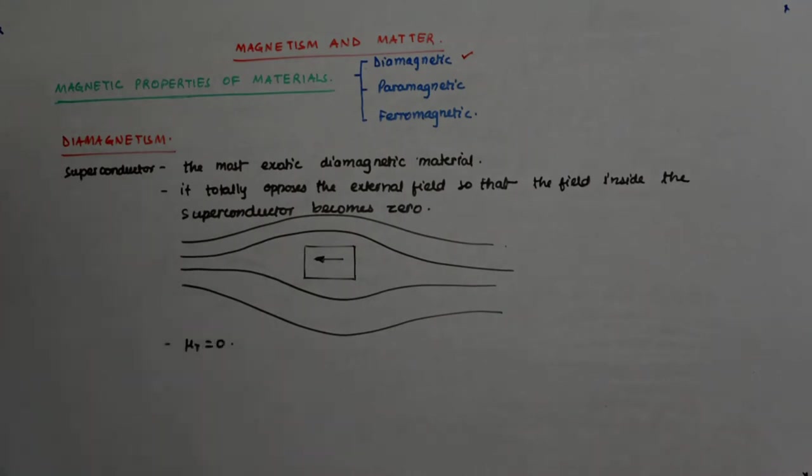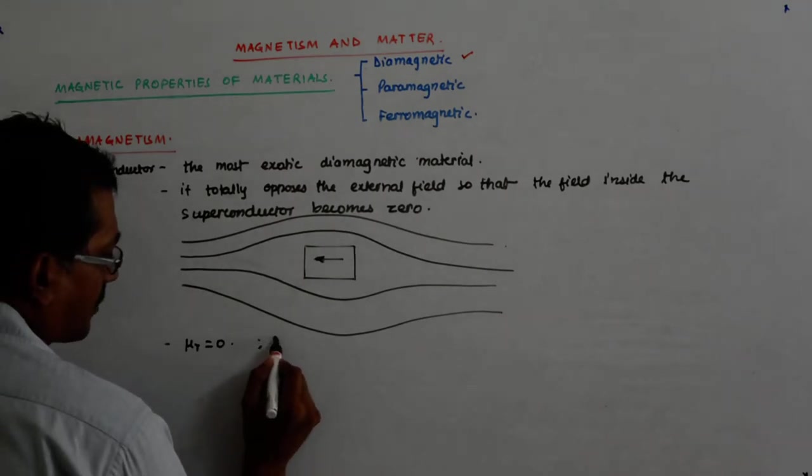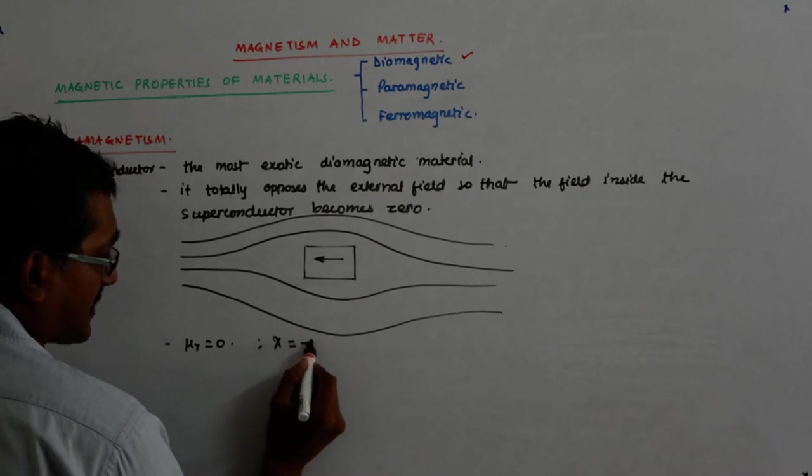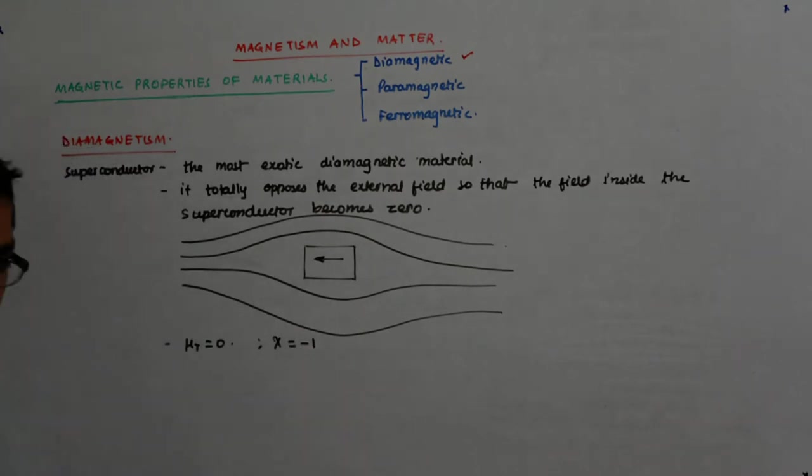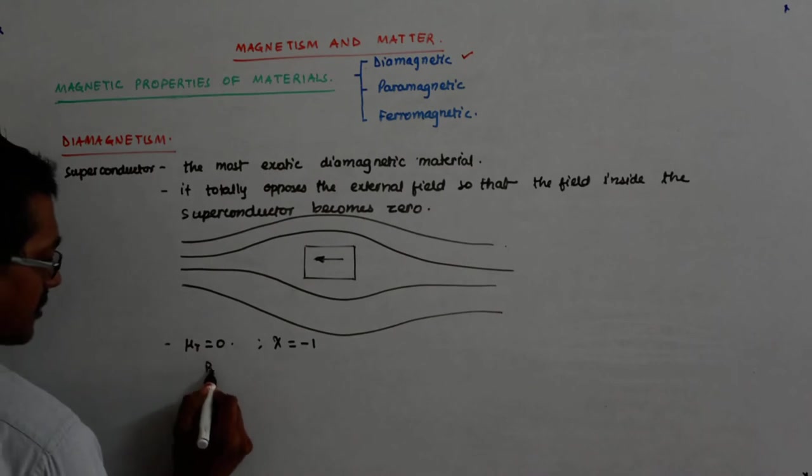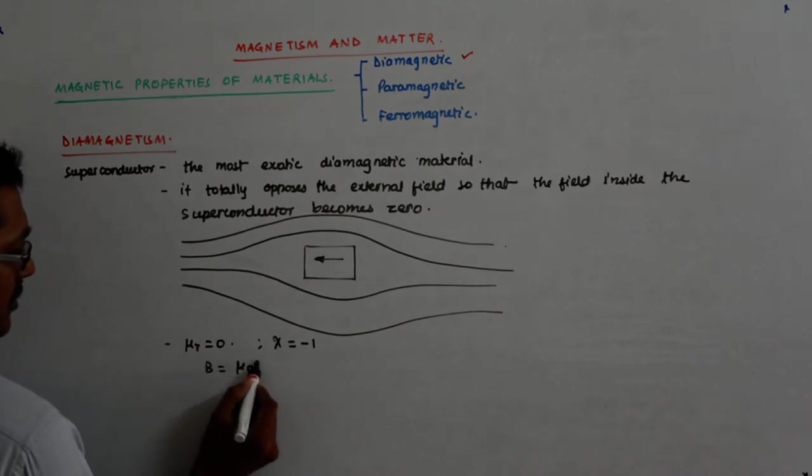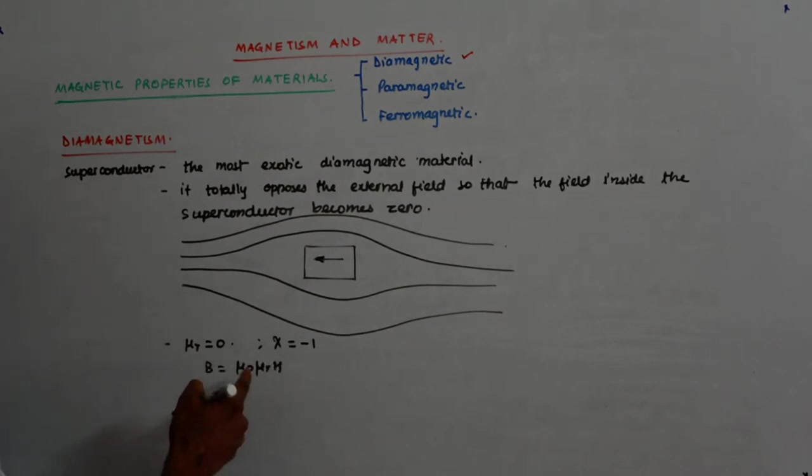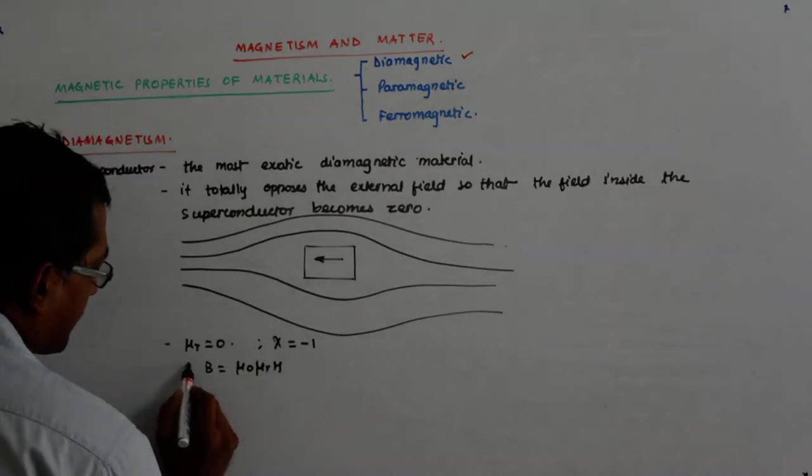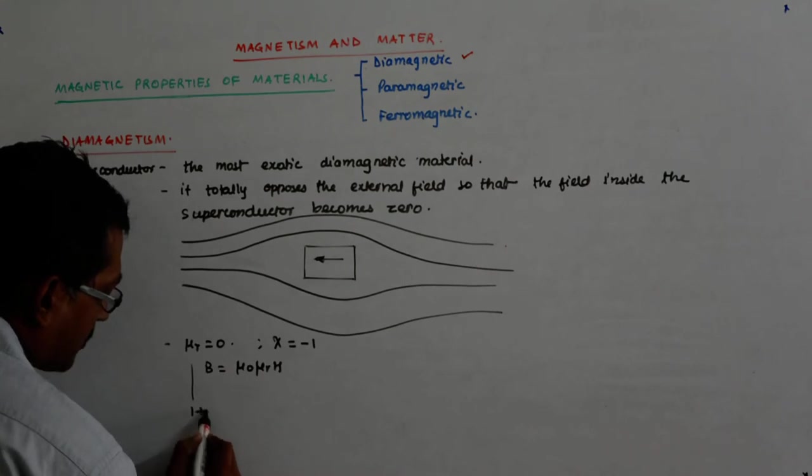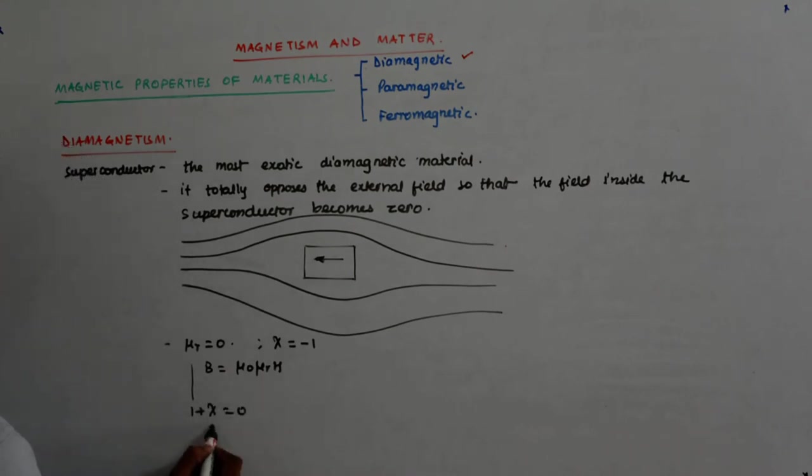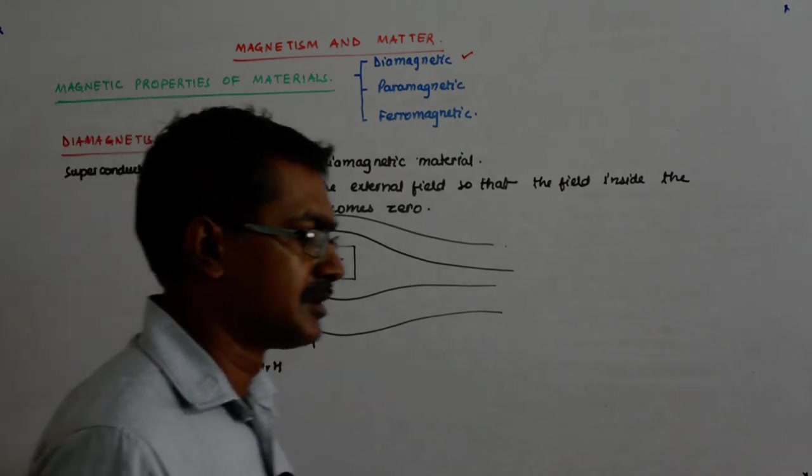What will be mu r for a superconductor? Zero? Minus one. So what is your chi? Chi will be minus one. Is it not? Mu r is zero because B is equal to mu naught mu r H. H is not zero, mu naught is not zero. So mu r will have to be zero. And since mu r is equal to one plus chi, so one plus chi is zero and hence chi is equal to minus one. So that's why this. We understand that?